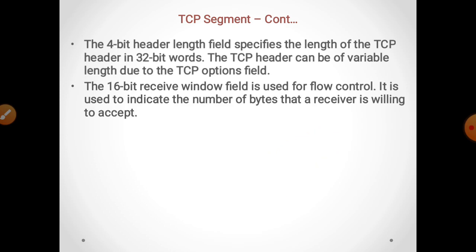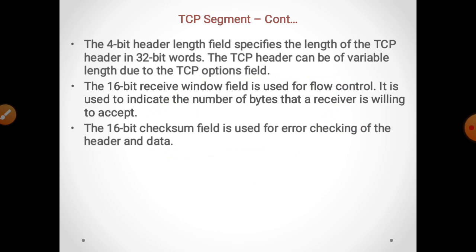The 16-bit window field is used for flow control. It indicates the number of bytes that a receiver is willing to accept. The 16-bit checksum field is used for error checking of the header and data.